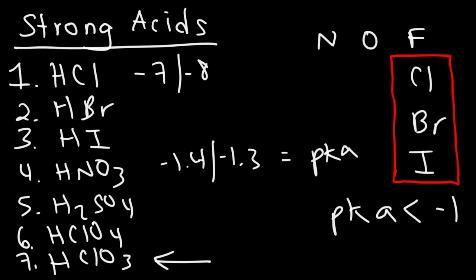HClO3, for example, has a pKa value of approximately negative 1. And so about 92% of the acid dissociates at room temperature.